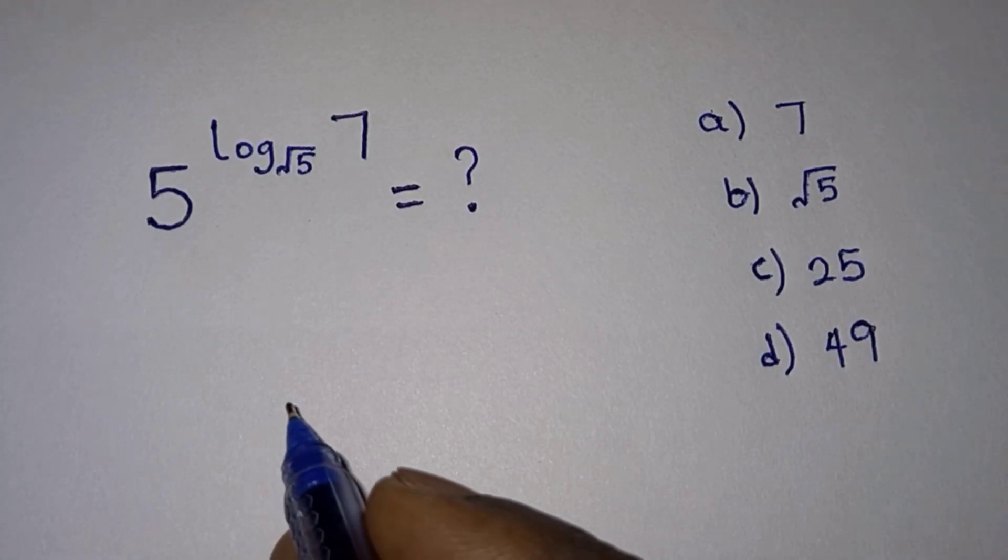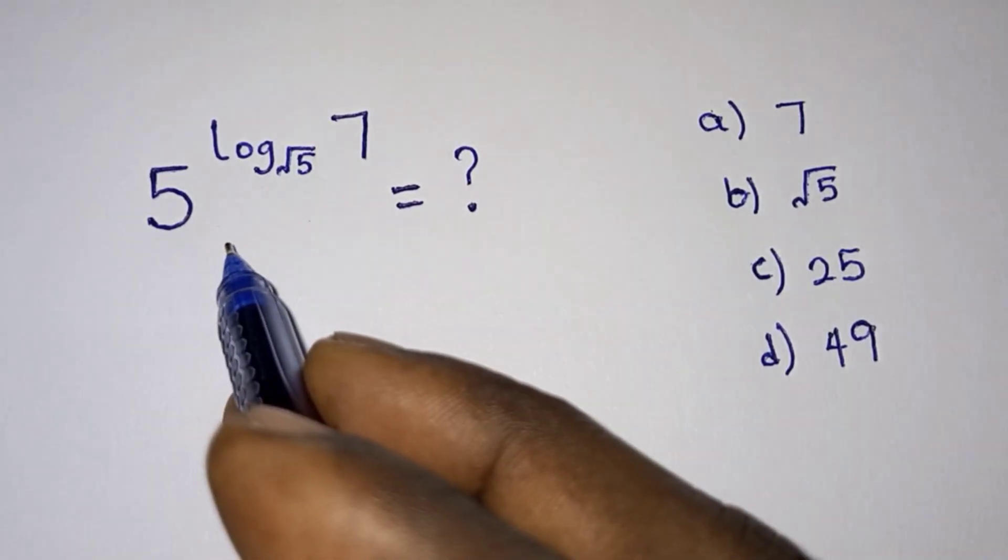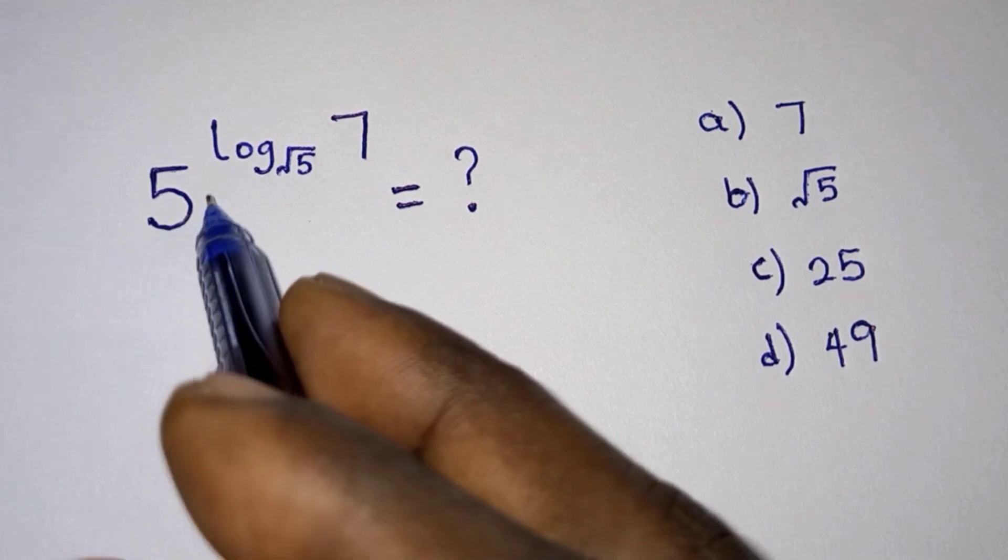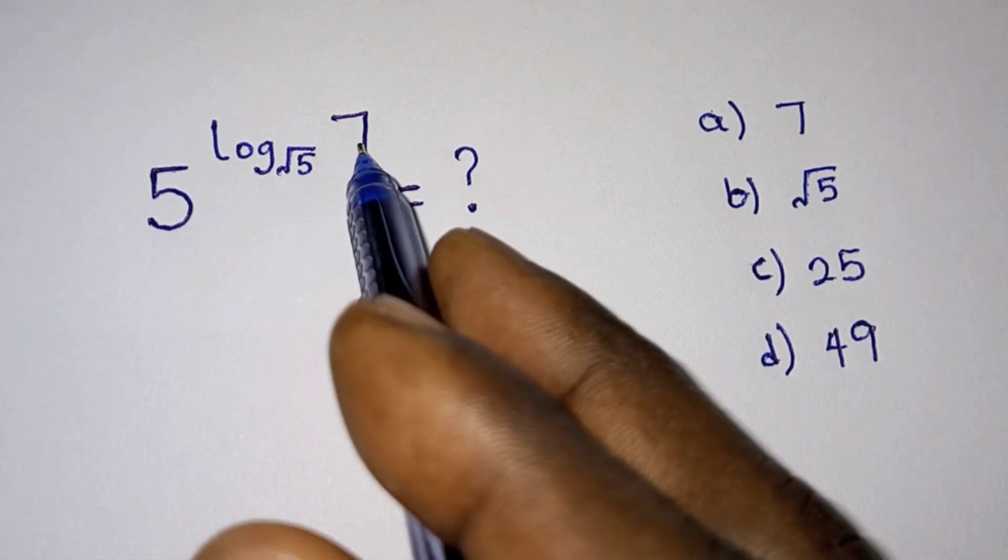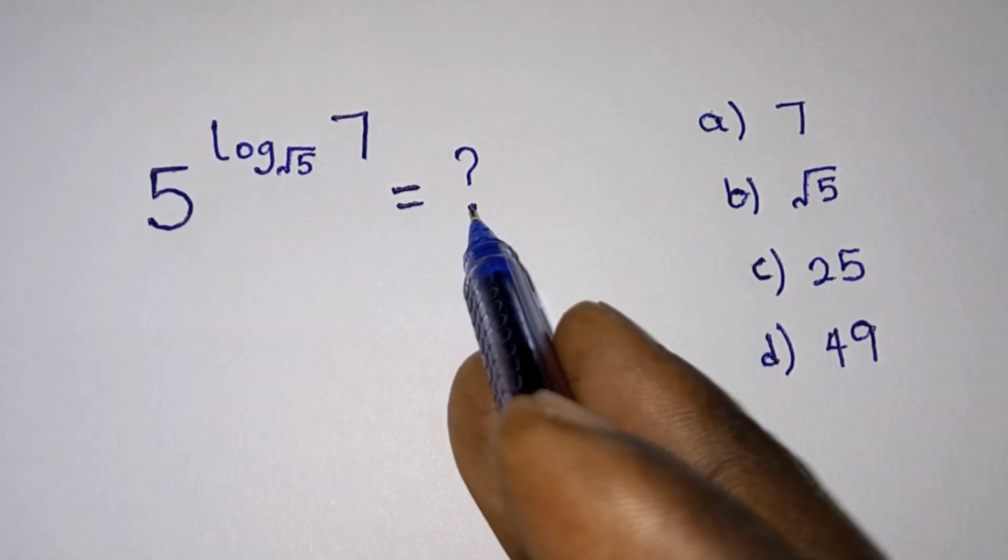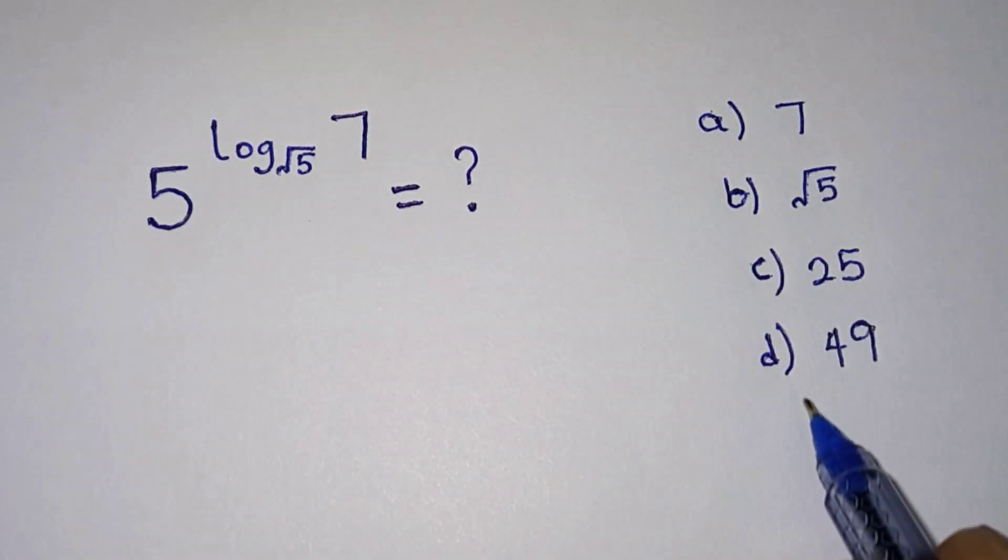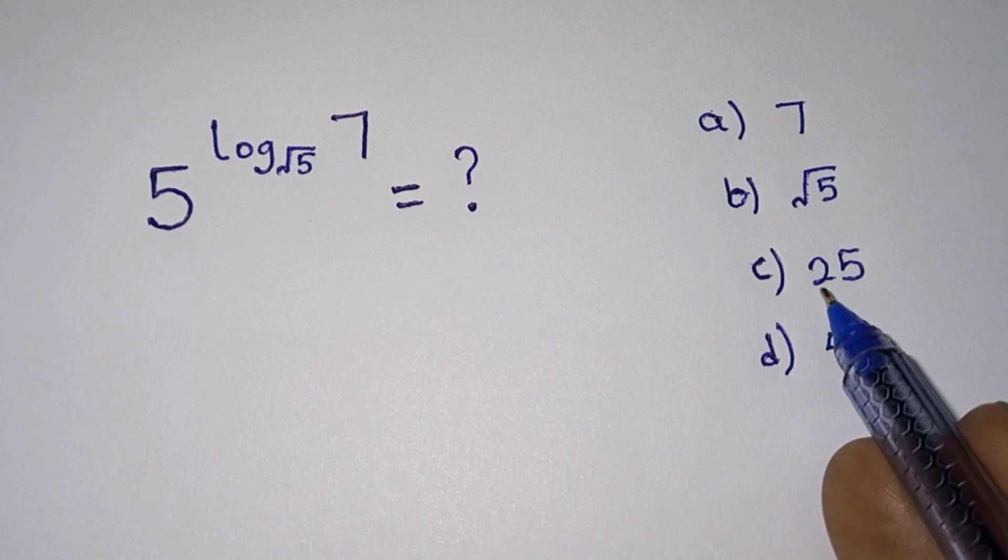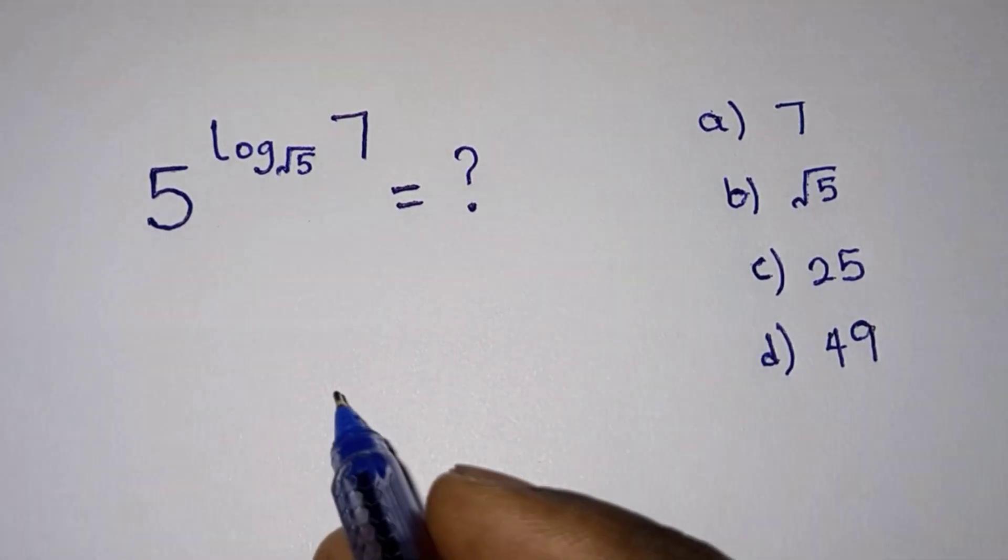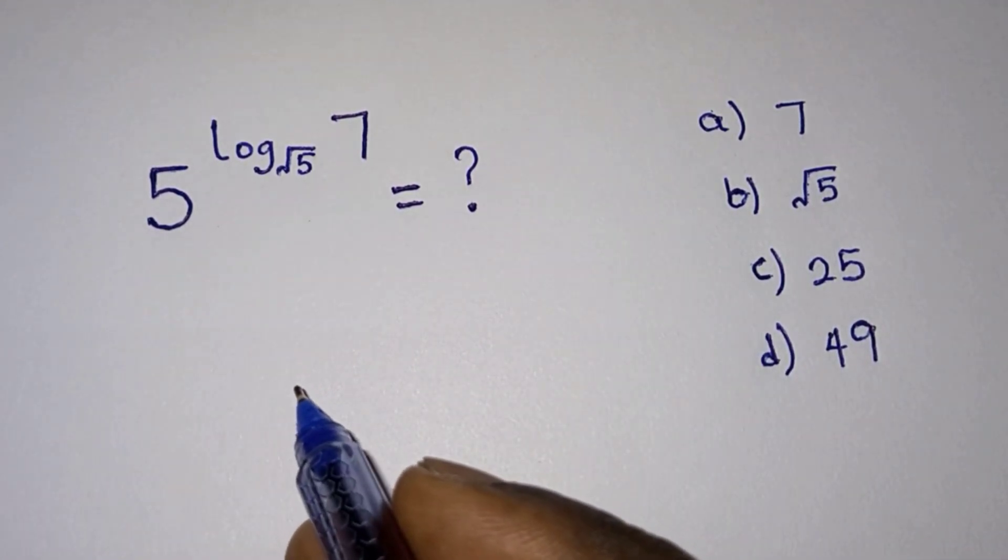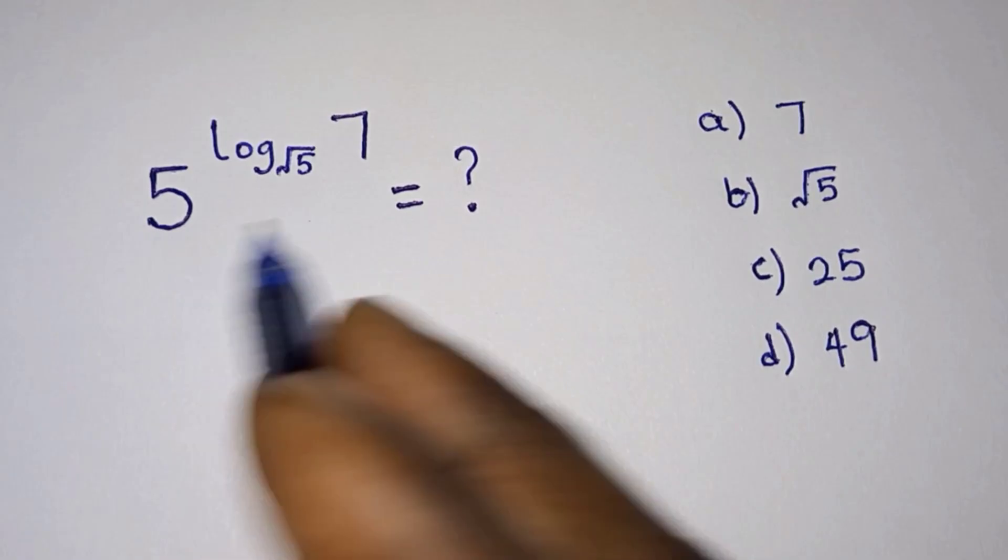Hello everyone, in this video we have this interesting logarithmic problem: 5 to the power log base root 5 of 7 equals what? These are the options you have to select the correct answer from. Before we begin, if you are new here, please subscribe to my channel and like the video. Now let's get started - how can we solve this one?